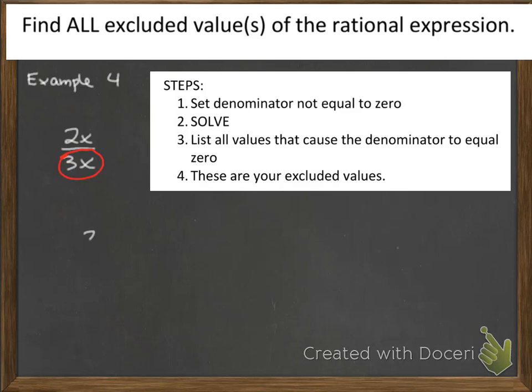So again, my denominator is 3x. I set that equal to 0. I solve for x. I find that x equals 0. Again, remembering to put a slash mark through this equal sign to remind myself that the one thing that x can't do is x cannot be equal to 0. And that is my excluded value.